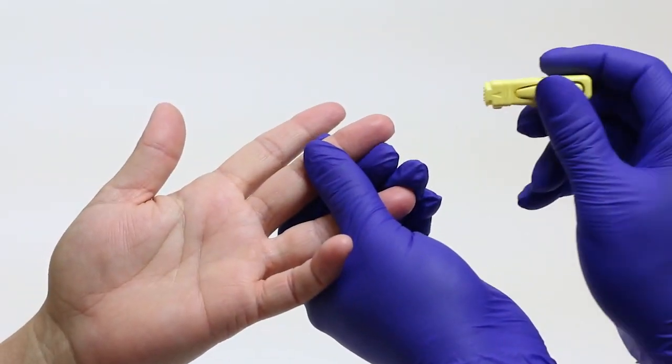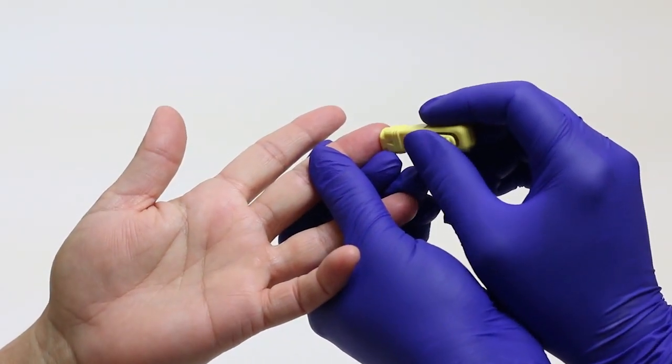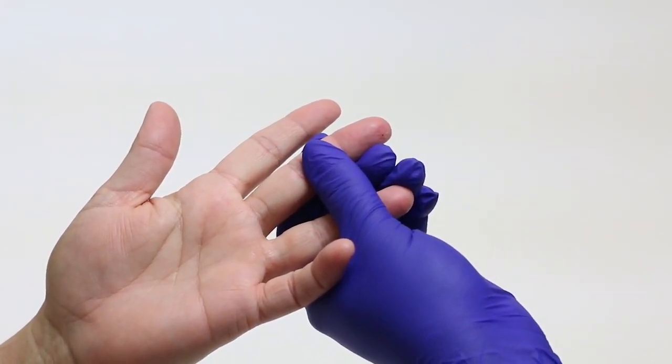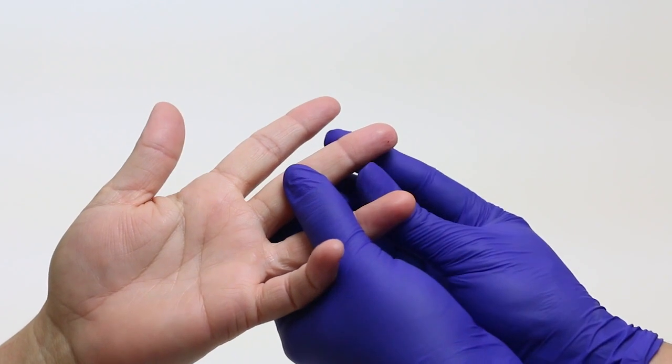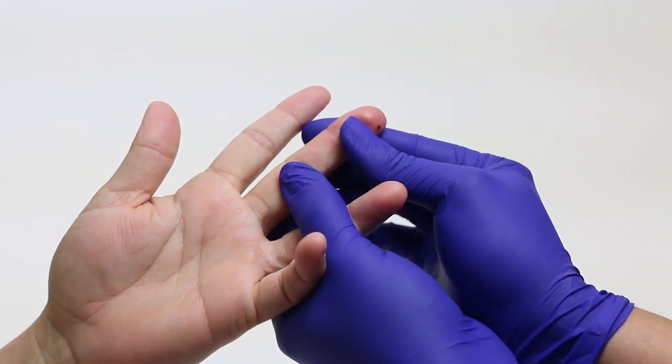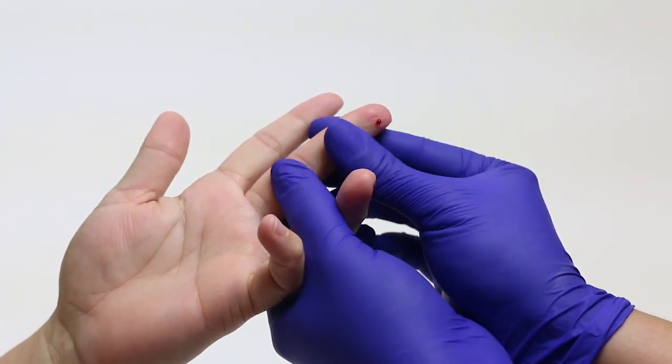Hold the chosen finger with your free hand. Release the lancet according to manufacturer instructions. Gently massage the finger towards the puncture site to obtain a full drop of blood.